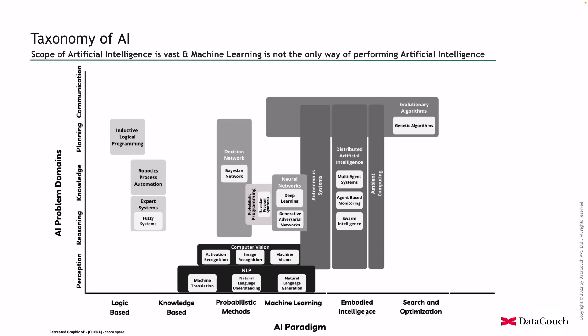There is also embodied intelligence — a kind of body consisting of movement, perception, interaction, and visualization. It is about applying intelligence based on these senses, like an engineering toolbox taking care of a body and its cognitive aspects. Then we have search and optimization, which involves finding the most optimized solution from many possible solutions for a given problem.